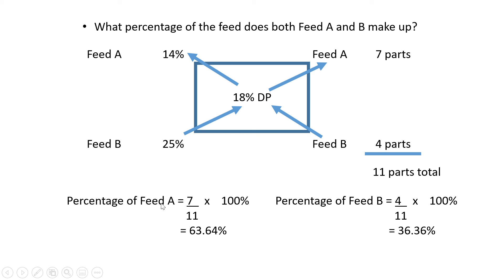To get the percentage for Feed A, you take Feed A's parts which was seven, divided by the total which is 11 parts. Seven parts divided by 11 times 100 gives you a percentage—that equals 63.64%, roughly 64%. So 64% of this feed mixture is Feed A, so the majority of the feed is Feed A.